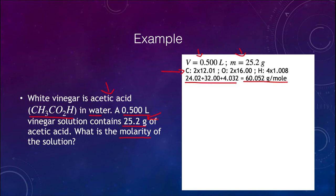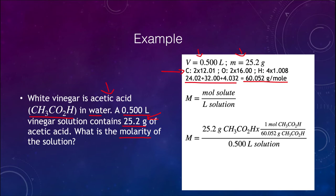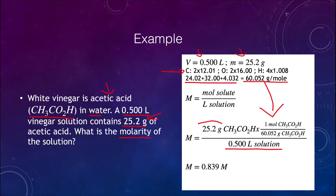Now that we know the molar mass, we use the molarity equation. We know 25.2 grams of acetic acid; we convert that to moles using the molar mass of 60.052, then divide by 0.5 liters of solution. We find the molarity of this solution is 0.839 moles per liter — just under one mole per liter.